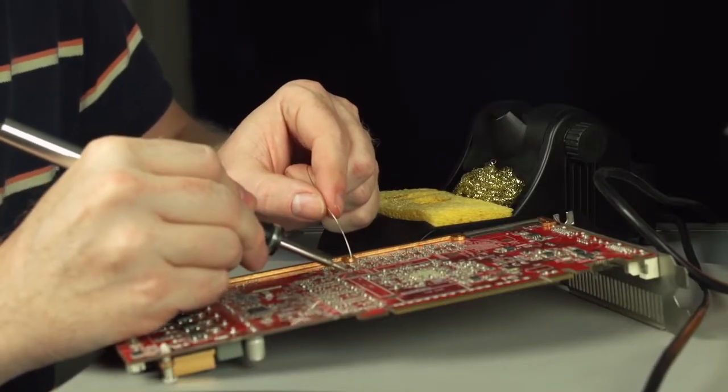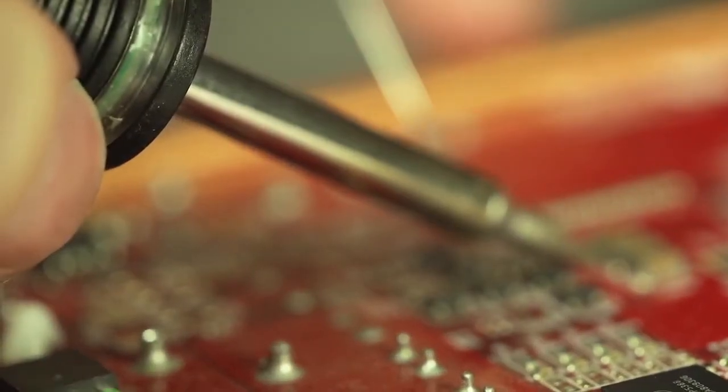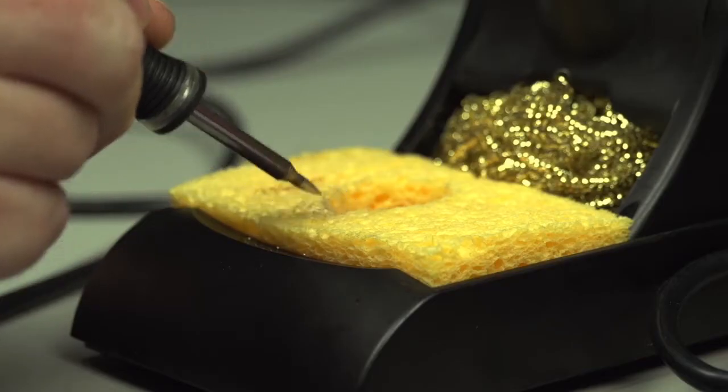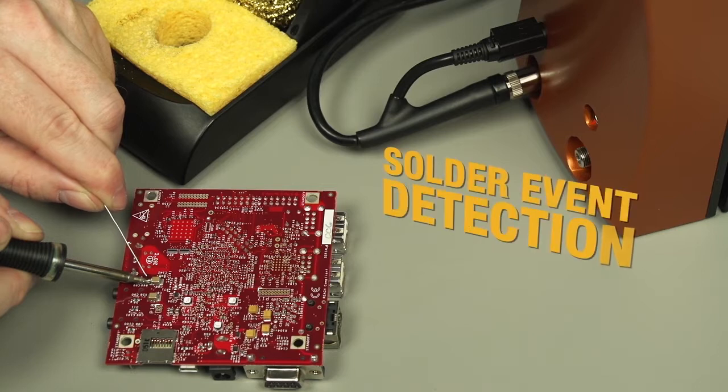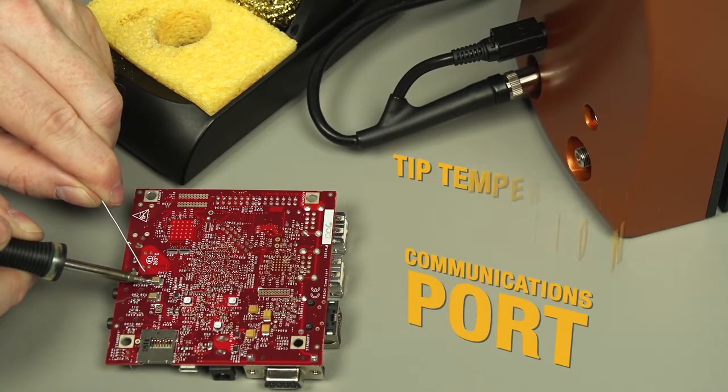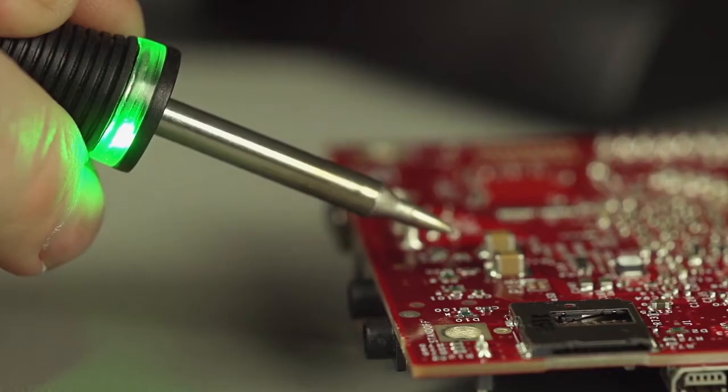Connection Validation provides feedback to the operator via a light ring embedded in the handpiece. Successful intermetallic compound formation triggers a green light, signaling to the operator that the ideal solder joint is created.